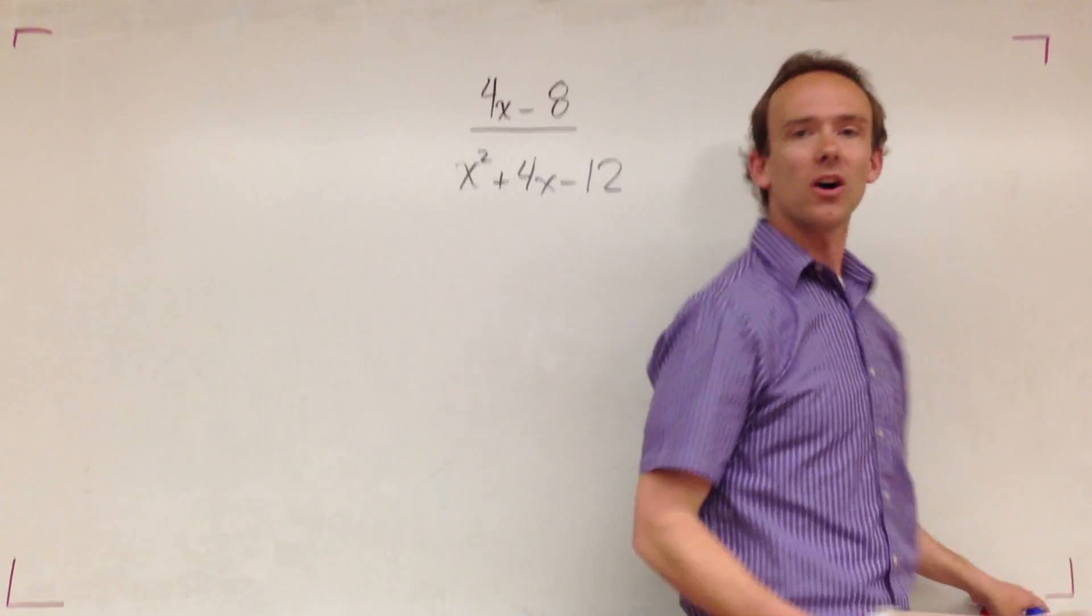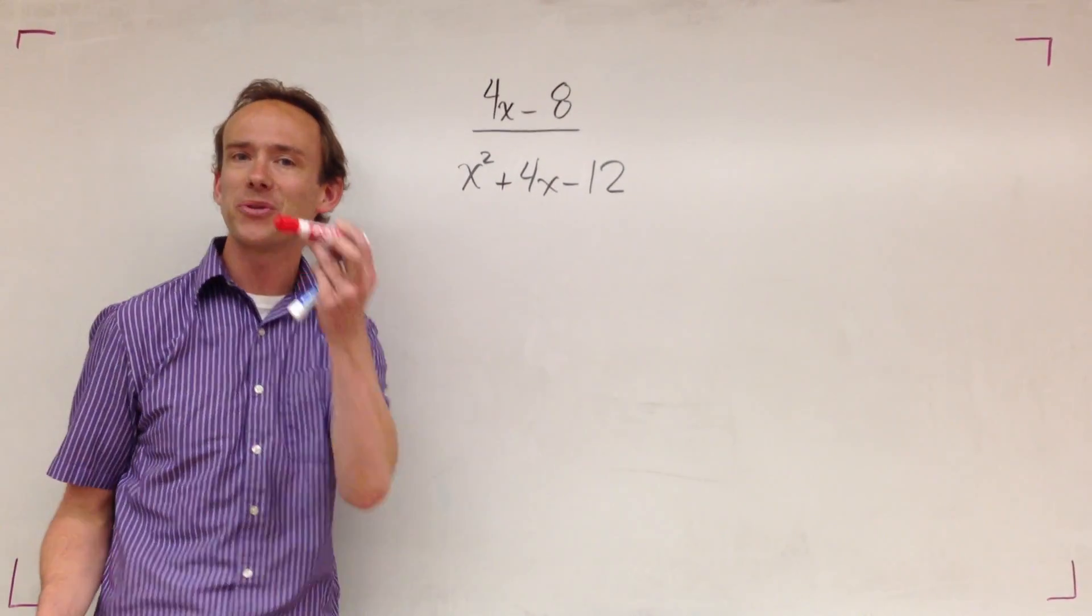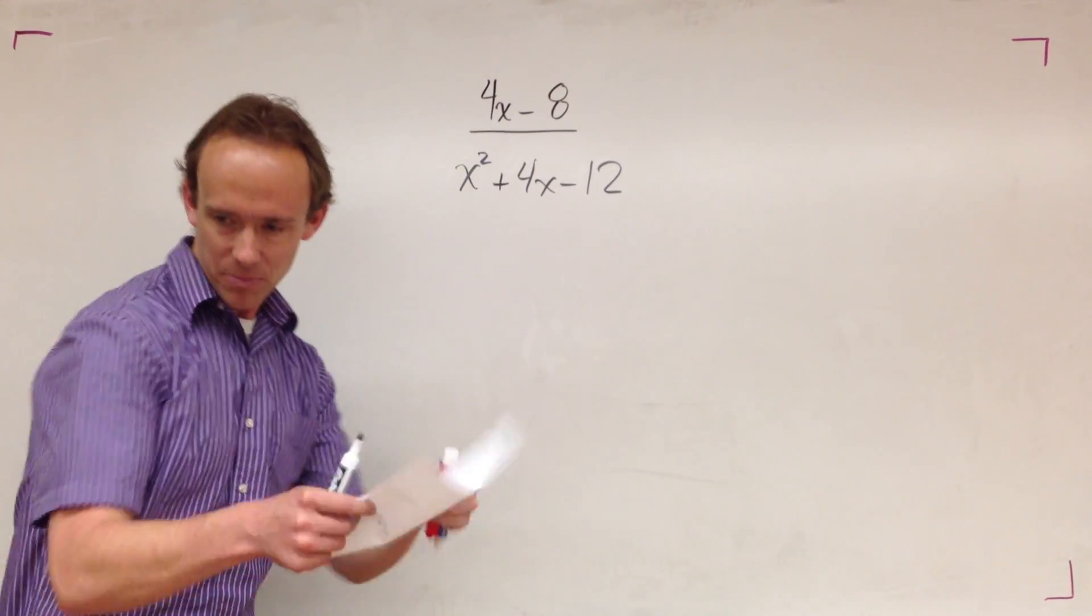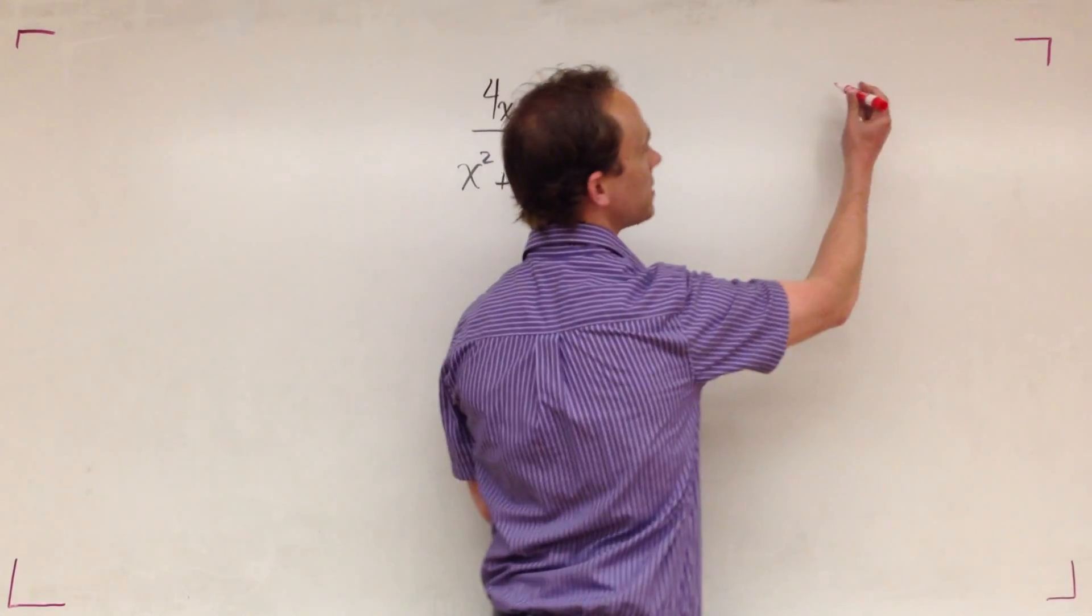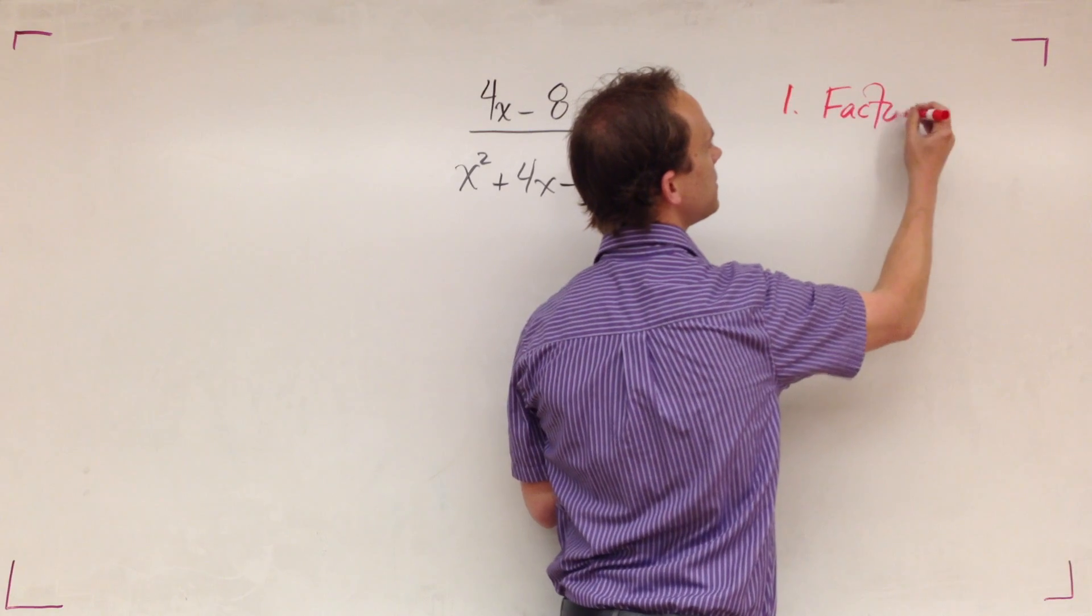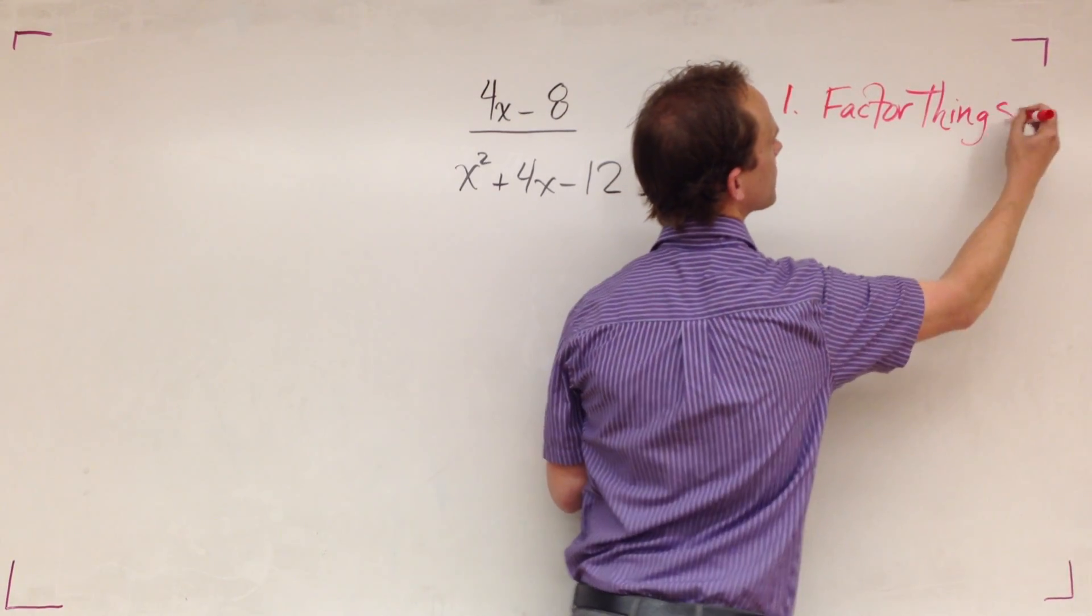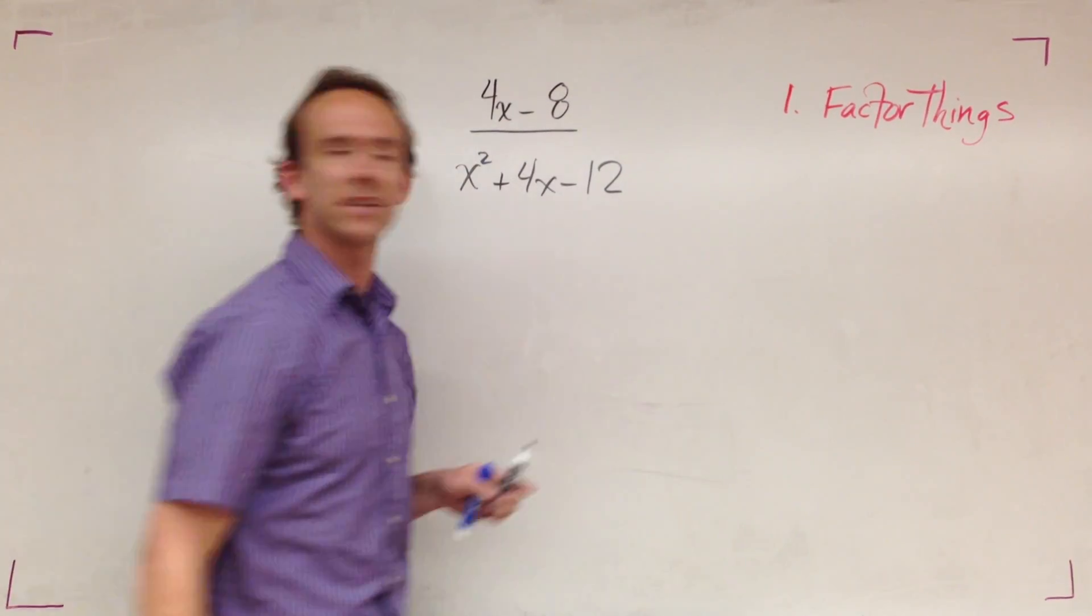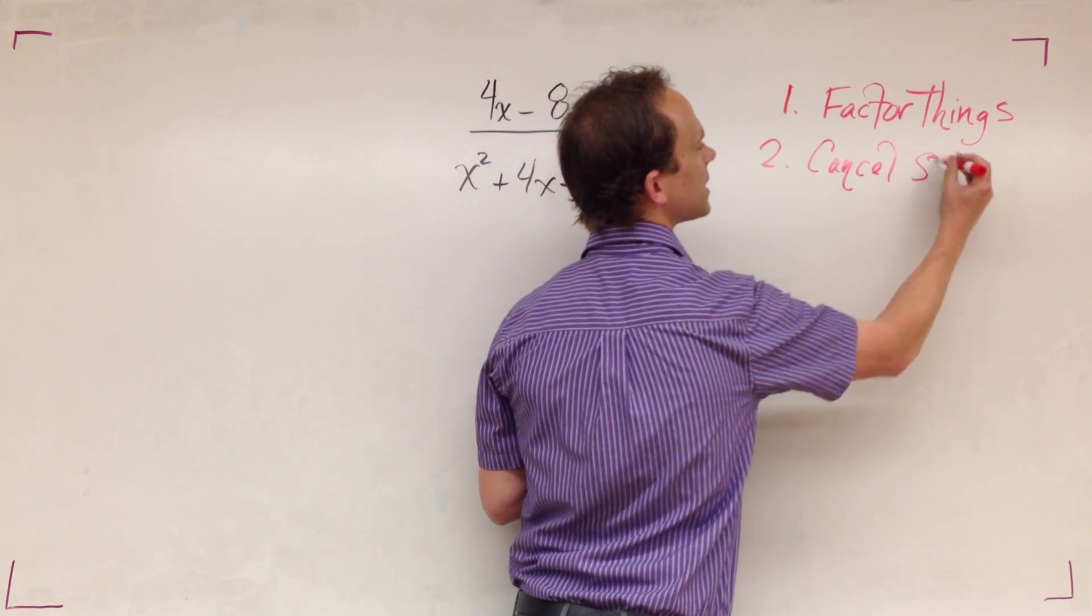So how do we simplify it? I'm going to break out the red pen for this one. It's a two-step process. Here's the first step: Step one, factor things. Step two, cancel stuff.